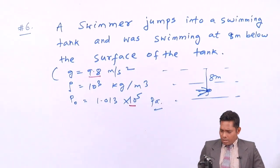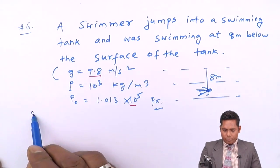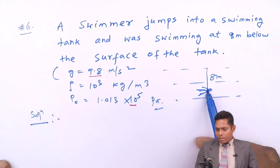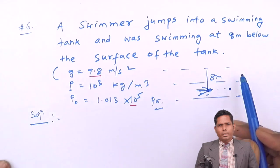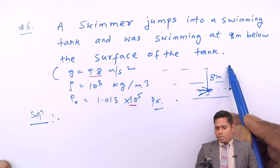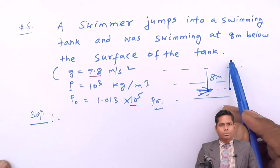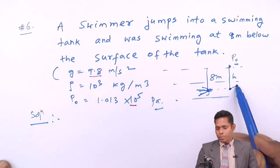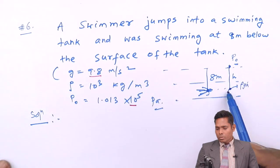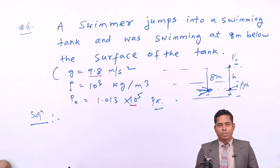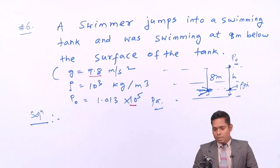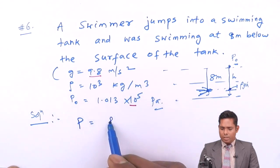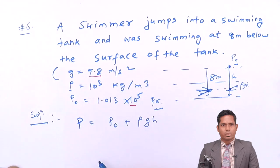Let us put the actual values and find the answer. The person is at the point 8 meters below. The free surface is exposed to atmosphere, so pressure there is P0. The pressure at any point below is the addition of all pressures lying above it. The pressure due to the liquid column is rho × g × h.